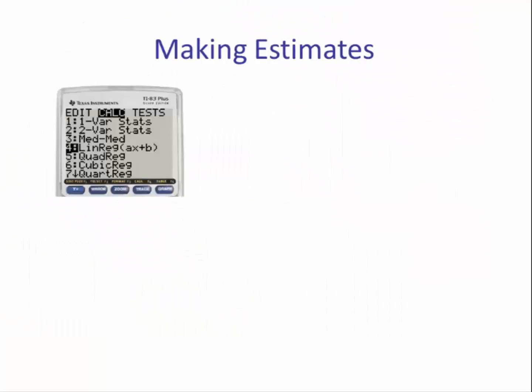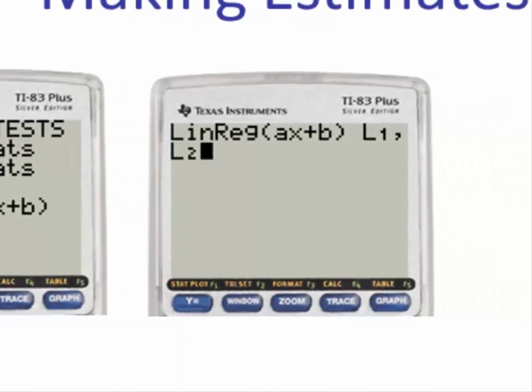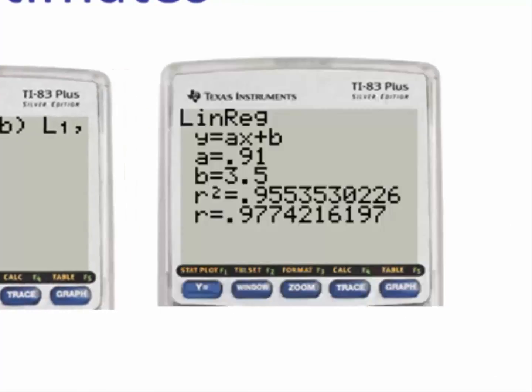Next we want to hit Stat, go to Calculate, then number 4 for linear regression. This pastes linear regression command in the home screen. Next we want to hit second and number 1 for list 1, and second and 2 for list 2. Hit enter and we have our linear regression for f. R squared is 0.955.